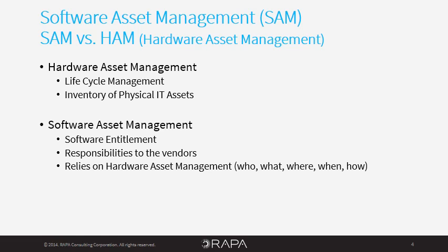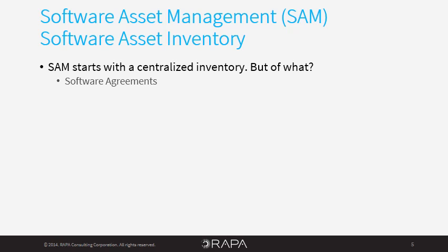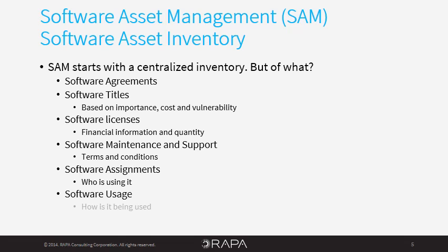As with hardware asset management, software asset data plays a crucial role in software asset management, and often starts with a centralized repository. But what are you collecting, and what is the scope of your inventory for SAM? The software asset inventory will be made up of software agreements, software titles and versions, software licenses, software maintenance and support contracts, software assignments, and software usage information.